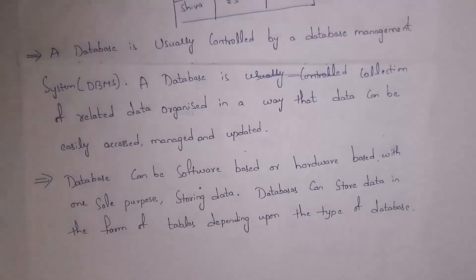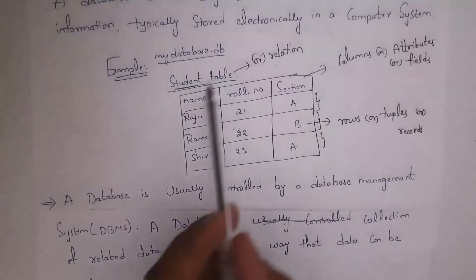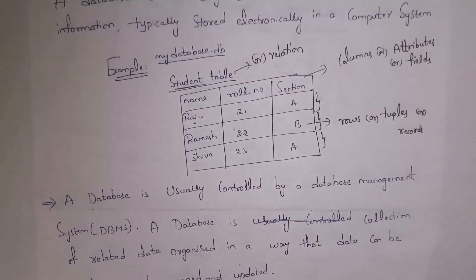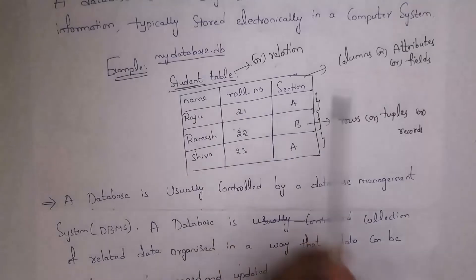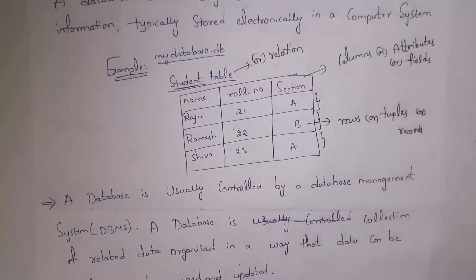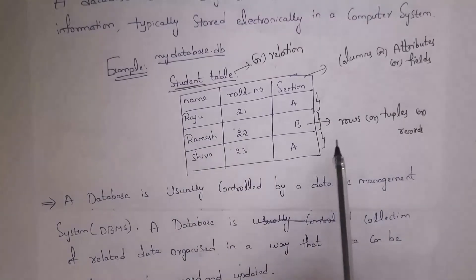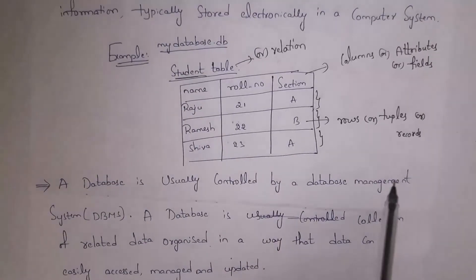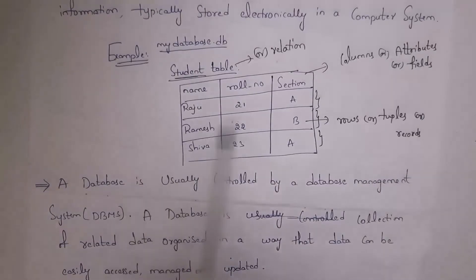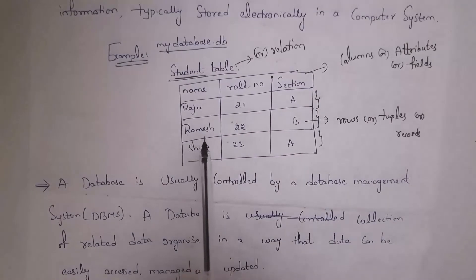Before starting this subject, you need to learn some basics. A table is also called a relation — both are the same. Name, roll number, and section are called column names, also referred to as attributes or fields. The rows — Raju/21/A, Ramesh/22/B, Shiva/23/A — are also called tuples or records. A single row like Ramesh, roll number 22, section B can be called a row, record, or tuple.